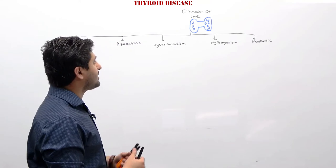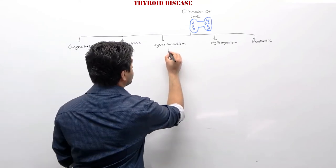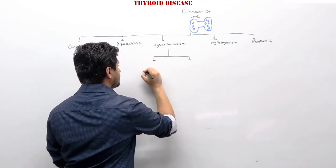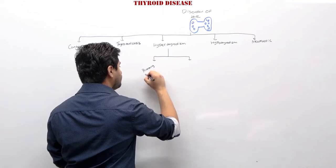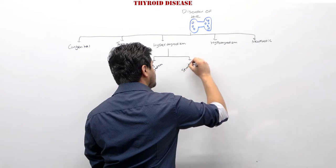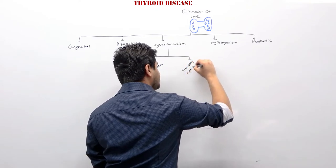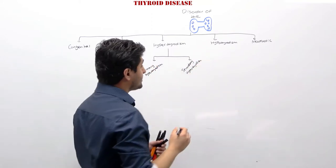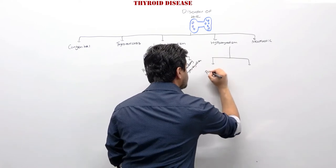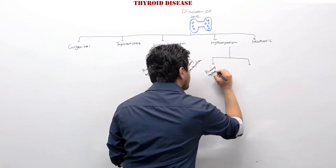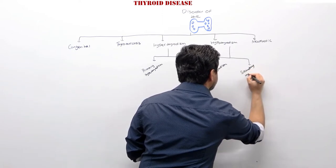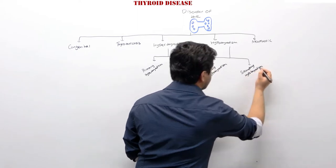When we talk about hypothyroidism, we classify it into two big categories: primary hypothyroidism and secondary hypothyroidism, and there is also a tertiary hypothyroidism. Similarly, hyperthyroidism can be classified into primary hyperthyroidism and secondary hyperthyroidism, and tertiary as well, though we'll focus on the main ones.